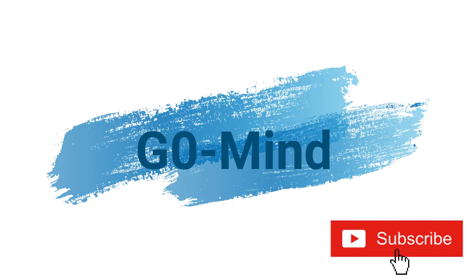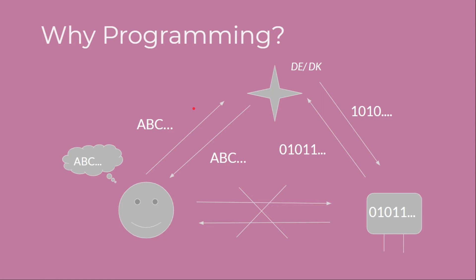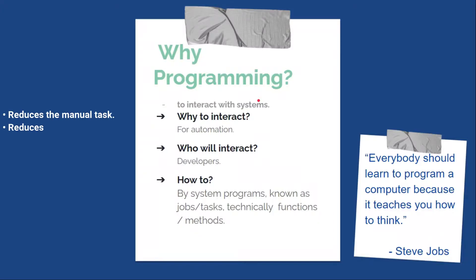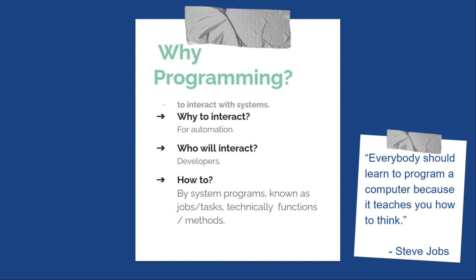We learn programming to interact with systems, and the need to interact with systems is automation. Automation reduces manual tasks, reduces the cost and time of creation, and most importantly, it reduces errors. So the next question arises: who will interact with systems?